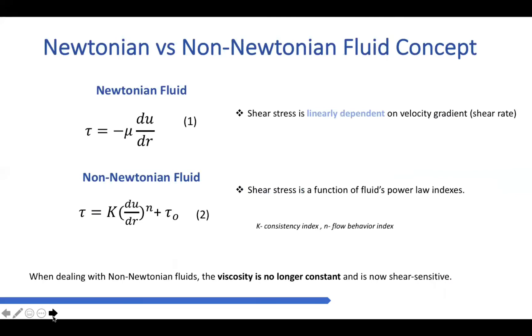Thanks to fluid class, people should have a decent idea of Newtonian fluids and the properties that go along with them. It is also important to understand that non-Newtonian fluids, since there's a high chance of coming across them in the industry. Determining this type of fluid that the specific material is simply boils down to whether or not the viscosity of the fluid changes under applied shear force. Newtonian fluids display a shear stress that is linearly dependent on the velocity gradient. Non-Newtonian fluids display shear stress as a function of the fluid's power law indexes. This means that the viscosity is no longer constant and fluids become shear sensitive. Here in this equation, K represents the consistency index and N is the ideal flow behavior index.